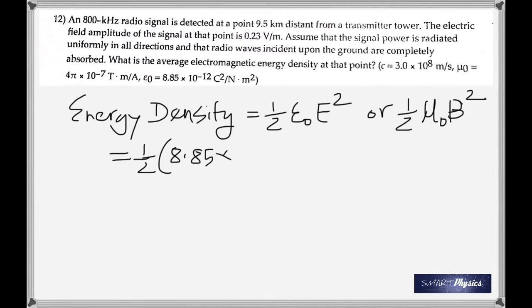Epsilon naught is 8.85 times 10 to the negative 12, and E naught is 0.23 whole squared.